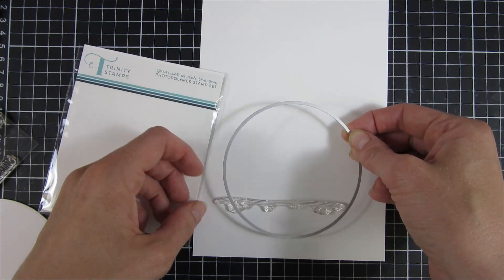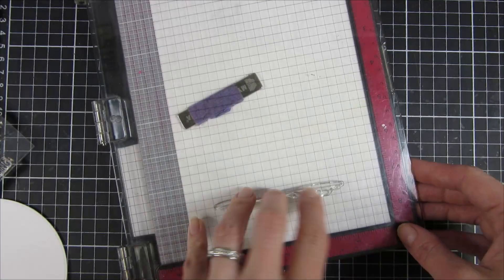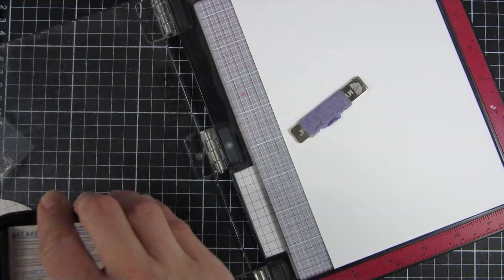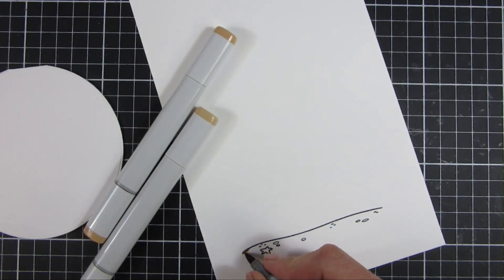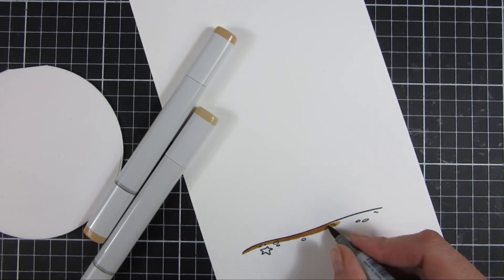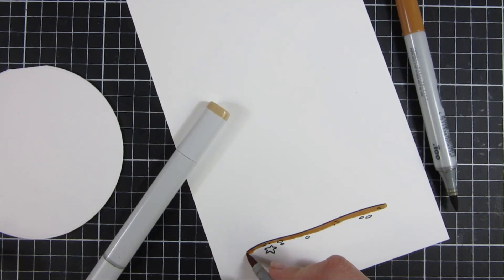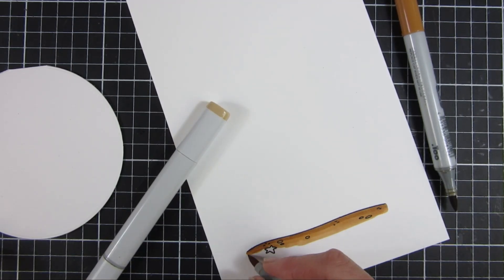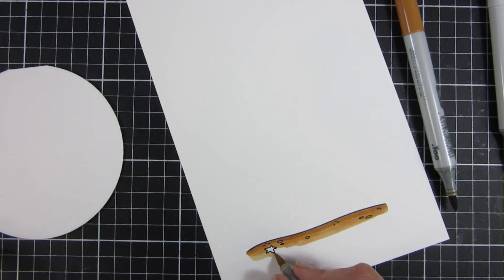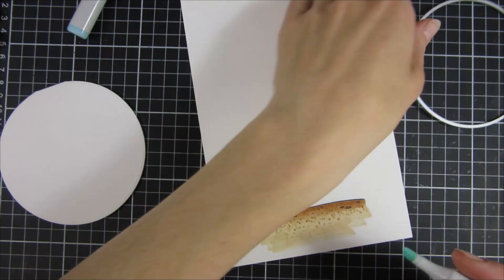For my under the sea card here, I wanted to create this bottom part. I stamped it on a piece of Neenah 80 pound cardstock and then I used some markers to color it in. This is a time where it probably would have been handy to have more than three shades in the same color family, but I made good use of what I had. You can see the dotted part that I added really helped.